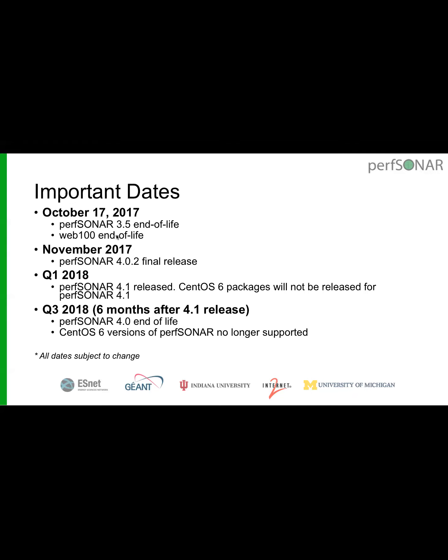Six months after 4.1 — roughly Q3 2018 — we will end-of-life PerfSONAR 4.0, which also means we'll no longer be supporting CentOS 6 versions. So looking roughly a year from now, we're not planning to support CentOS 6 anymore. If you're running a CentOS distribution, we want to start moving people toward CentOS 7.